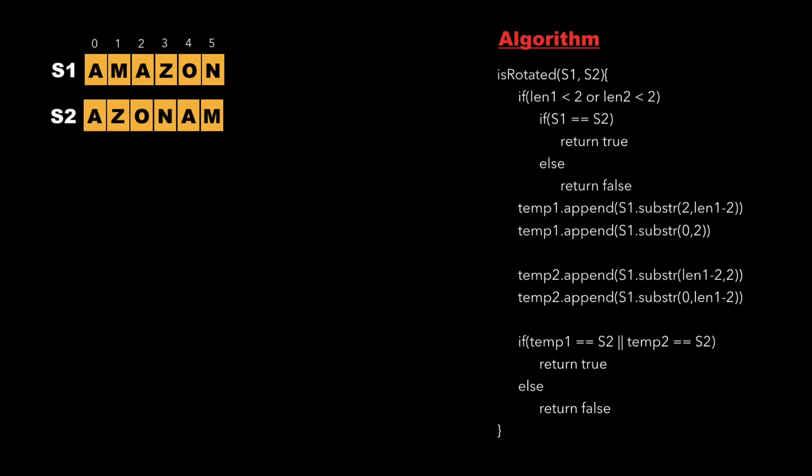The right side of the screen shows the algorithm where we have a function called is rotated whose arguments are the string s1 and s2. We declare a few variables namely len1 and len2 and initialize them with the length of string s1 and s2 respectively. We also create two temporary strings namely temp1 and temp2 which are used to store the right rotation and left rotation of the string s1.